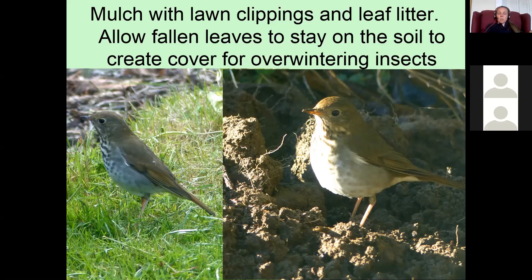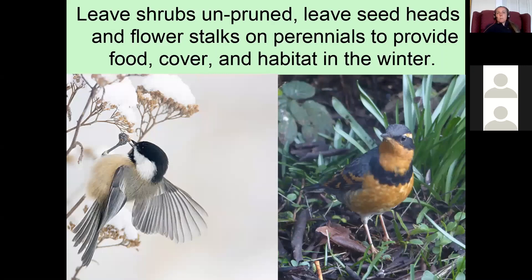The hermit thrush is a species I always welcome. They sing an ethereal, beautiful song at high elevation right now but come down low in winter and can visit our yards. Leave shrubs unpruned and leave seed heads and flower stalks on perennials to provide food, cover, and habitat in winter. Other winter yard birds include the black-capped chickadee and the varied thrush — a male varied thrush is in the same family as the robin and hermit thrush.